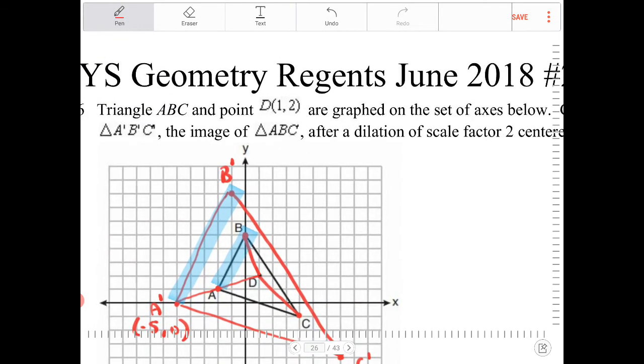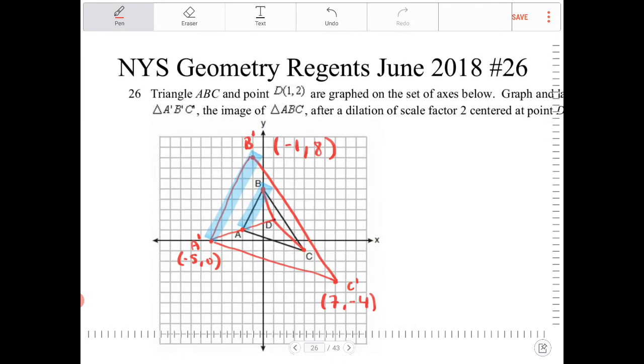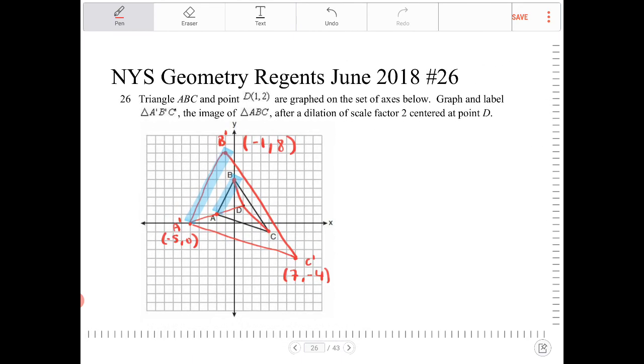And B' is negative 1, comma, 2, 4, 6, 8. Negative 2, 1, comma, 8. Okay? Okay.